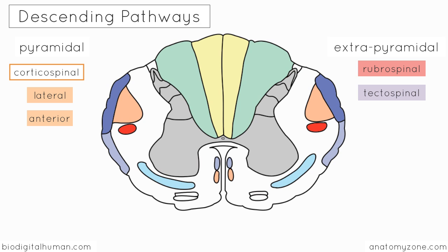Then we have the vestibulospinal tract, highlighted in bright pink, which originates in the vestibular nuclei in the pons and the medulla. You've got a lateral and a medial vestibulospinal tract — highlighted here in pink is the lateral vestibulospinal tract. The vestibulospinal tract receives information from the bony labyrinths and the cerebellum relating to balance and posture, and this pathway allows for the control of extensor motor neurons in order to maintain posture.